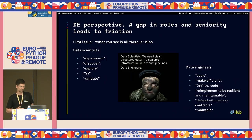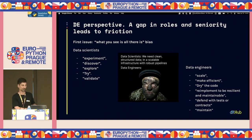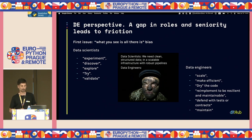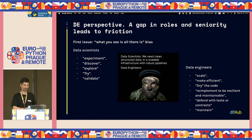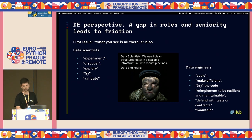From my perspective, part of the issues between ML people using pandas and data engineers building their pipelines come from the different roles these people have. A data scientist will experiment, discover, explore, try, and validate. While data engineers scale, make things efficient, DRY the code, re-implement things to be resilient, defend it with tests or data contracts, and maintain pipelines.